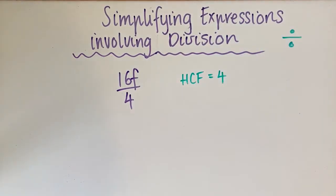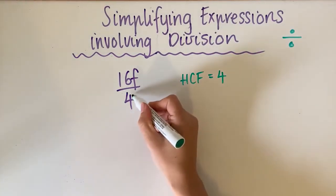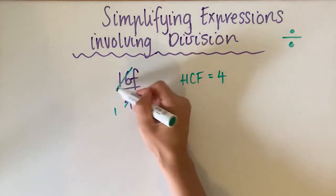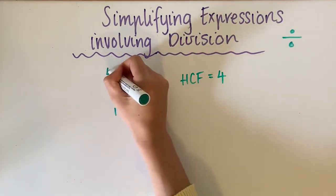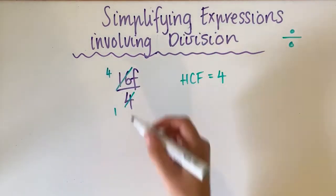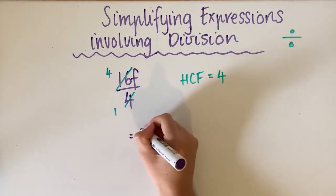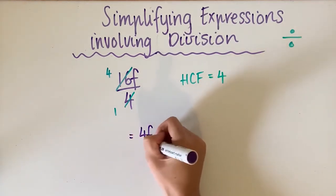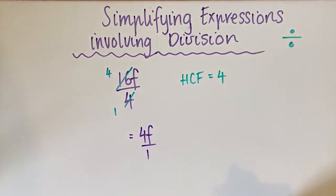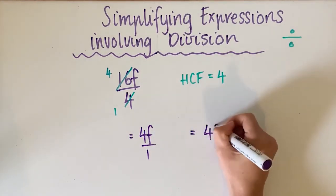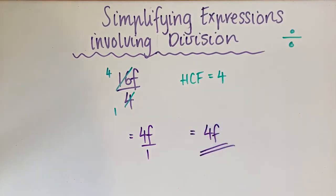So what we need to do is cancel out. 4 goes into 4 one time, and 4 goes into 16 four times. Now we only have an f on the top, and there's no cancelling we can do with the pronumerals for this one — you'll see an example later where we can do that. So this becomes 4f over 1, and anything over 1 is just itself, so the final answer is 4f.